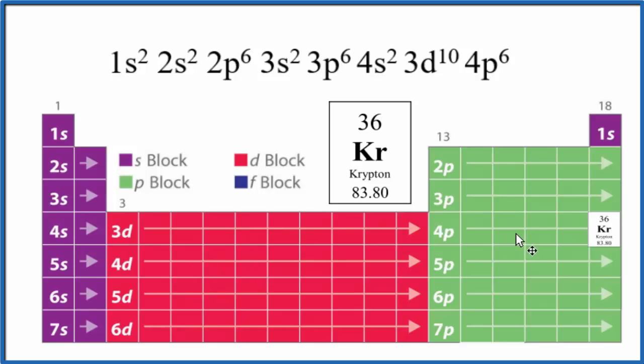So let's do that. We'll start off with 1s. We go 1s1, 1s2. S can only hold 2, so we have our 1s2. Then we go to 2s: 2s1, 2s2, that's full. There's our 2s2. 2p: 1, 2, 3, 4, 5, 6. When that's full, we go to 3s.